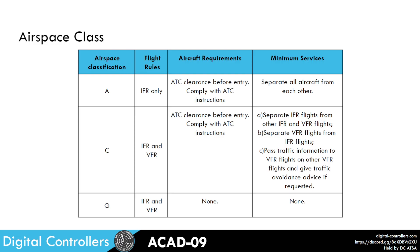Then we also have class Golf, which is the least restrictive airspace. There is normally no controller and aircraft don't need to follow instructions. Class Alpha and Charlie are known as controlled airspace, whereas class Golf is known as uncontrolled airspace.